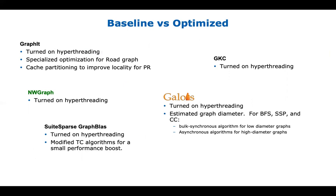SuiteSparse also mostly just turned on hyper-threading, with only a one-to-three percent boost from triangle counting changes. GraphIt did heavier work, with specialized optimizations for the road graph and cache partitioning improvements for PageRank locality. Galois went the furthest: they turned on hyper-threading but also estimated graph diameter to determine whether bulk synchronous or asynchronous algorithms would perform best, embedding that heuristic into their system.